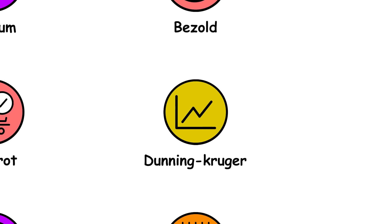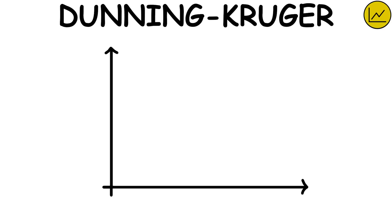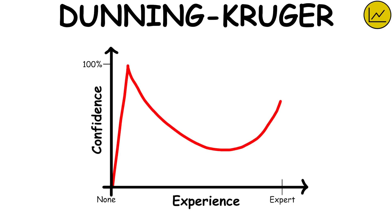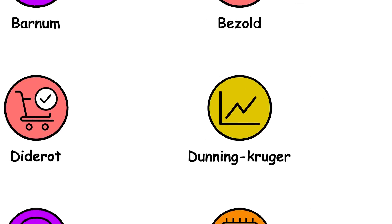Dunning-Kruger effect. The Dunning-Kruger effect is a cognitive bias where inexperienced and less competent individuals in a field tend to overestimate their own competence.